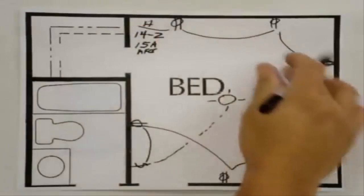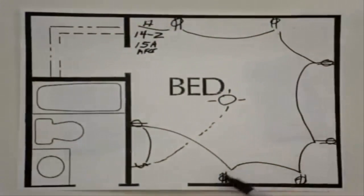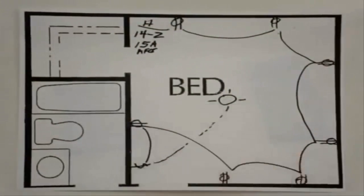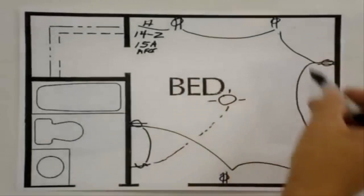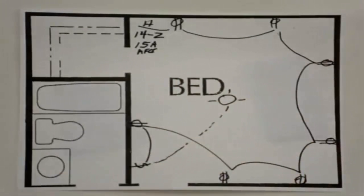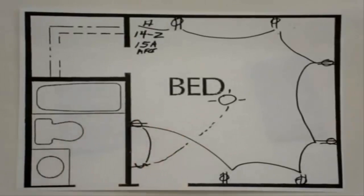We start here, go around and we end up here and we'll hook up there. So everything will be a 14-2 and that's how we'll do a typical bedroom with its own breaker.